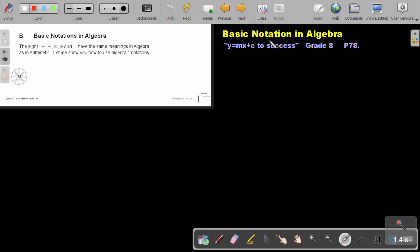Part 2: Basic Notation in Algebra. You will find this on page 78 in the Namibia Mathematics Grade 8 textbook, Y equals MX plus C to success. Basic Notation in Algebra. The signs plus, minus, multiply, divide and equal have the same meanings in algebra as in arithmetic.